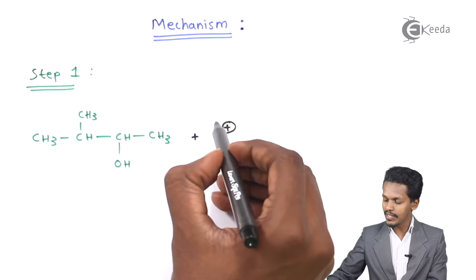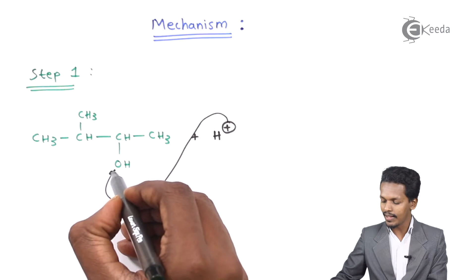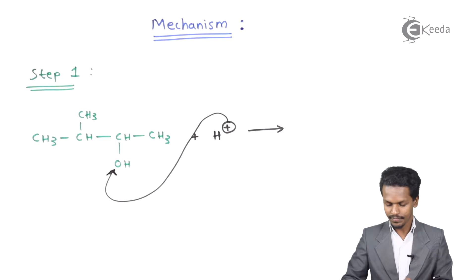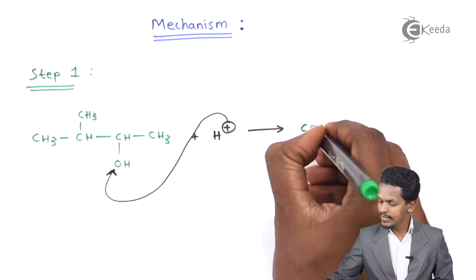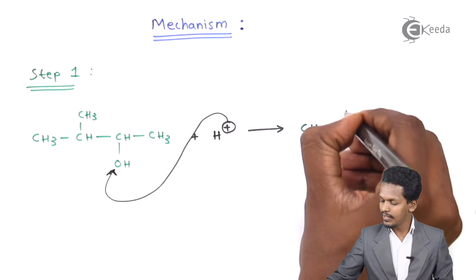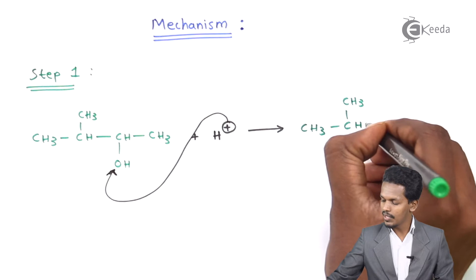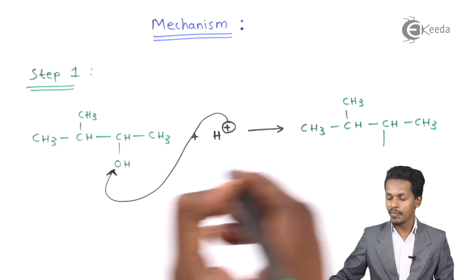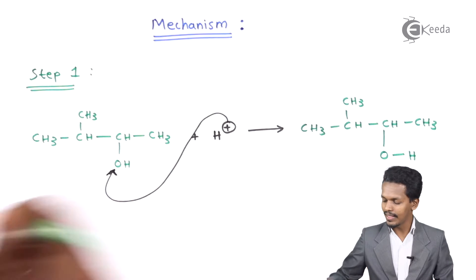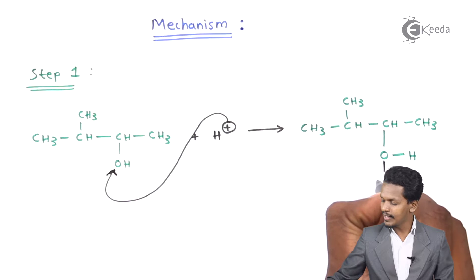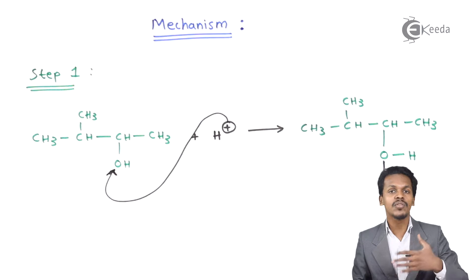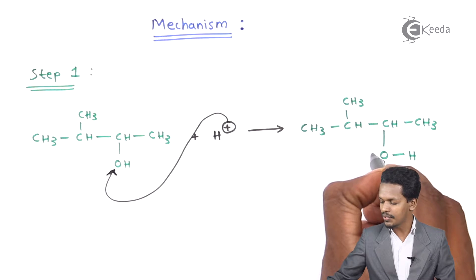The H+ ion will attack the oxygen atom, which is partially negative in charge. As a result, the product obtained is the protonated alcohol — the OH group now has H+ attached to it. Since the oxygen atom now has a valency of 3, it is not stable and therefore carries a positive charge on it.